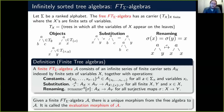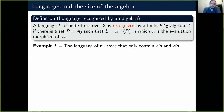There is a unique morphism going from the tree algebra to some finite algebra A, called the evaluation morphism of A. It is unique because we fix the value of the constants, and then by induction we get this unique morphism. A language L of finite trees over alphabet sigma is recognized by a finite algebra if there is a set P in the sort A of the empty set, such that L is the inverse image of P under the evaluation morphism.